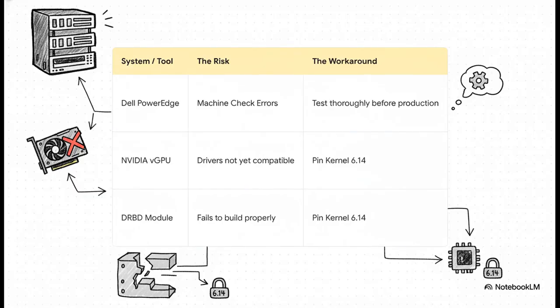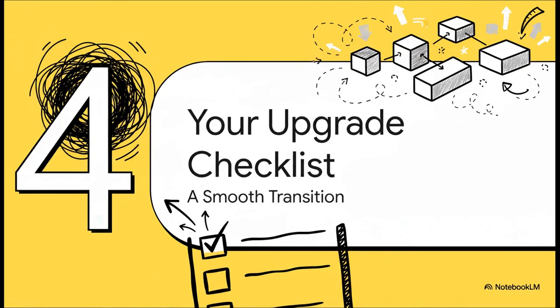Let's break this down point by point. First, if you're running on certain Dell PowerEdge servers, people are seeing machine check errors. Second, if you use NVIDIA vGPU, the drivers aren't compatible yet. And third, the DRBD storage module is failing to build. For the NVIDIA and DRBD issues, the workaround is the same — you have to manually pin your system to the older kernel 6.14. So knowing all that, how do you actually pull off this upgrade safely? That brings us to our upgrade checklist.